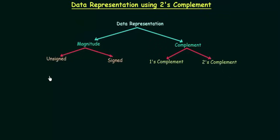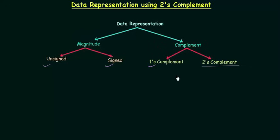In the last two presentations we completed unsigned, signed and ones complement representation of positive and negative binary numbers. In this lecture we will learn how to represent positive and negative binary numbers using two's complement. Positive number representation is not an issue because it is the same as compared to unsigned, signed and ones complement.